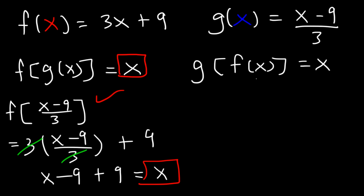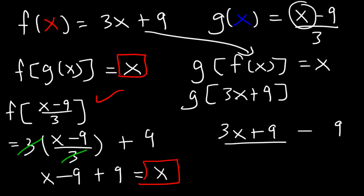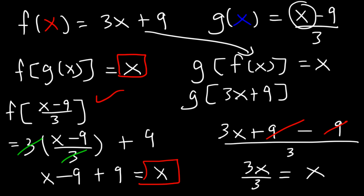Now let's focus on g of f of x. Let's replace f of x with 3x plus 9, then plug this into g. So it's 3x plus 9 minus 9 over 3. Nine minus 9 is 0, leaving 3x divided by 3, which is x. Because both composite functions equal x, f of x and g of x are inverses of each other.